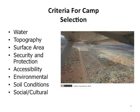Criteria for selection of settlement areas include water availability, topography, surface area, security and protection, accessibility, environmental factors, soil conditions, and social-cultural factors.